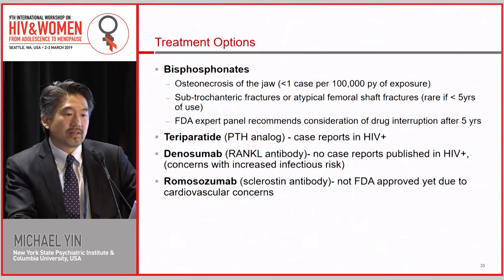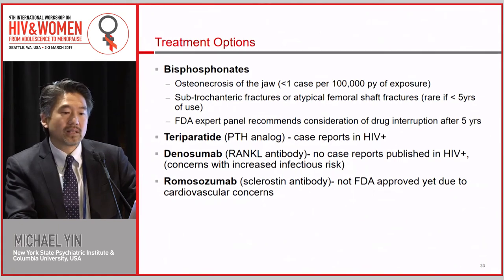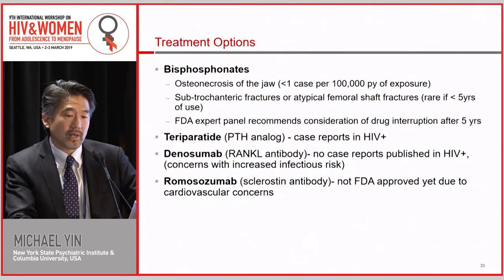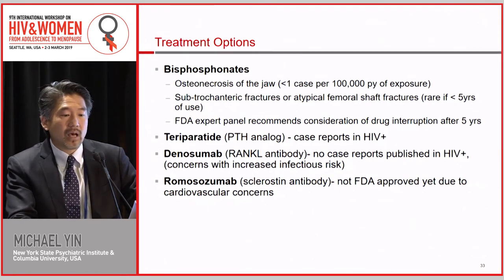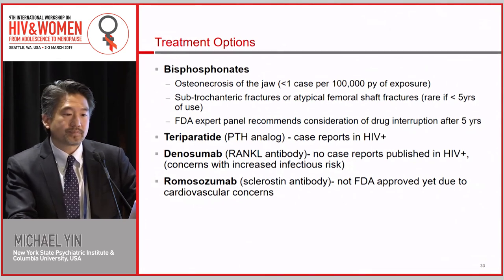If bisphosphonates are not enough and bone density doesn't improve, there is teriparatide, which has been reported in HIV to be safely used and effective in case reports. Denosumab and romosozumab have not been looked at in HIV.